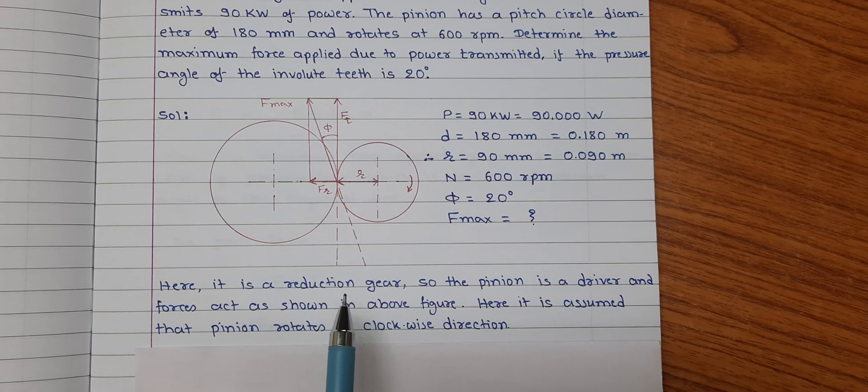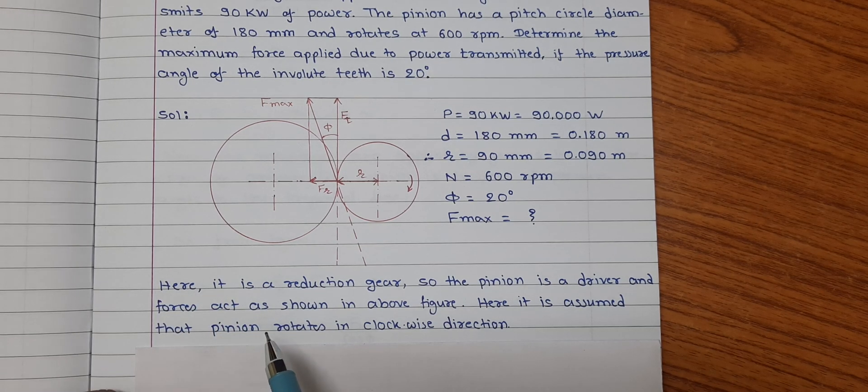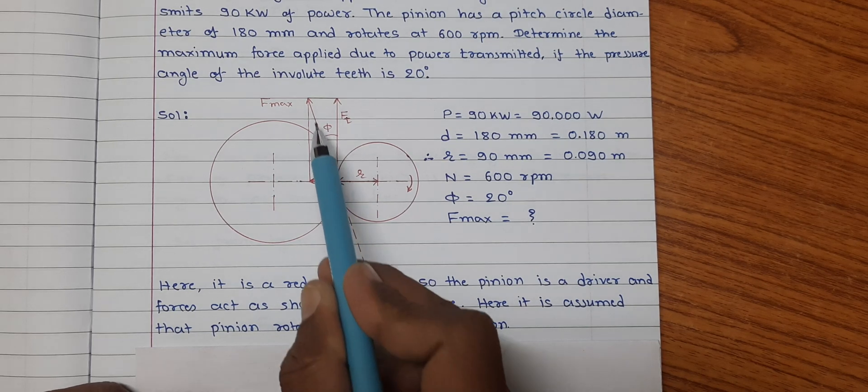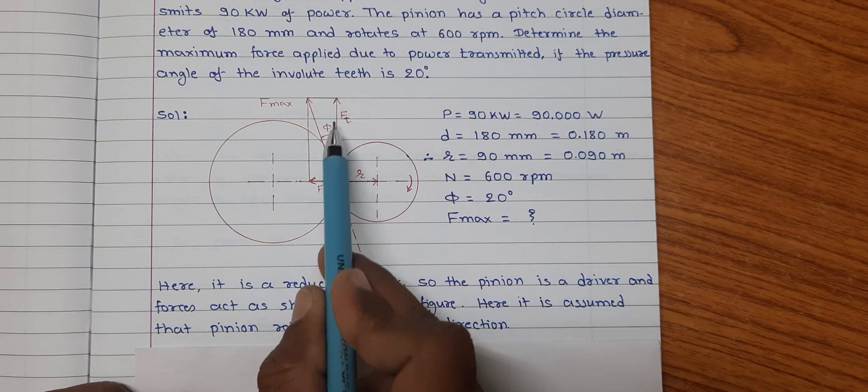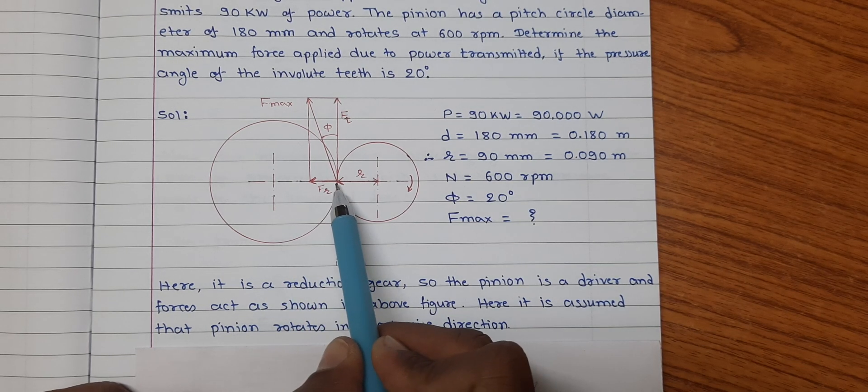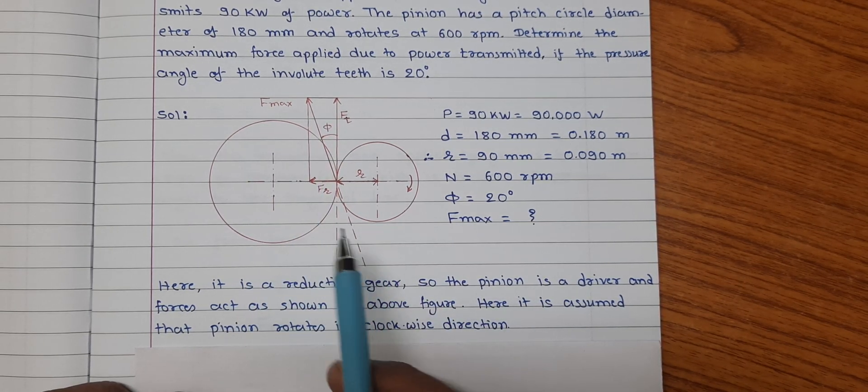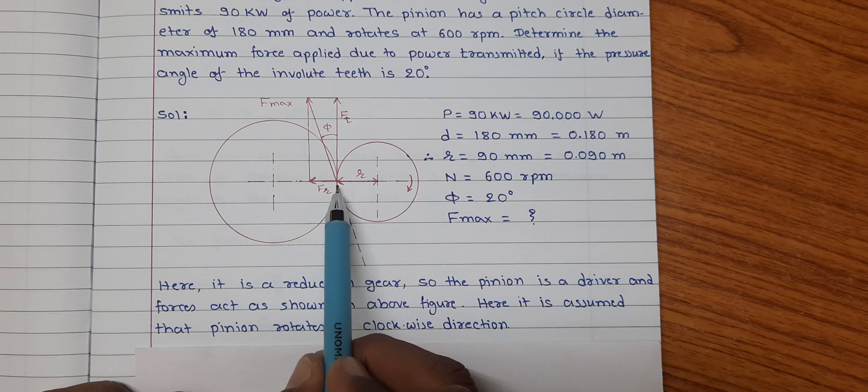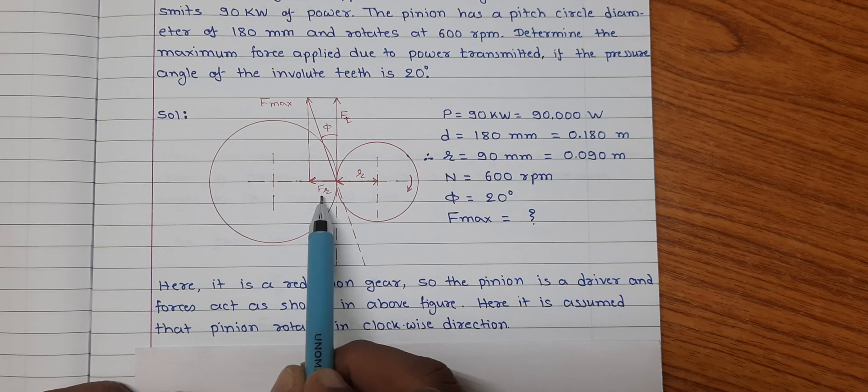So the force diagram will be as shown in this figure. The maximum force will act in the direction of the pressure line which is inclined at pressure angle to the common tangent to the pitch circles. The force exerted along this, f max, can be resolved into two components: one is along the common tangent ft, and other is along the radial, that is center line, that is fr.